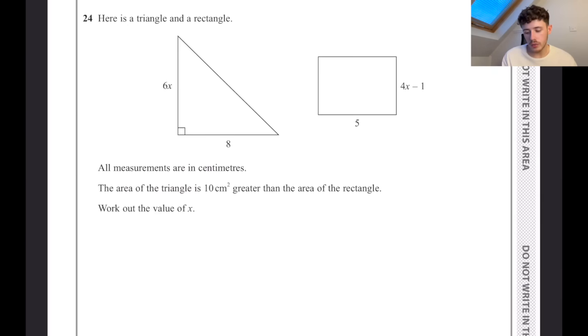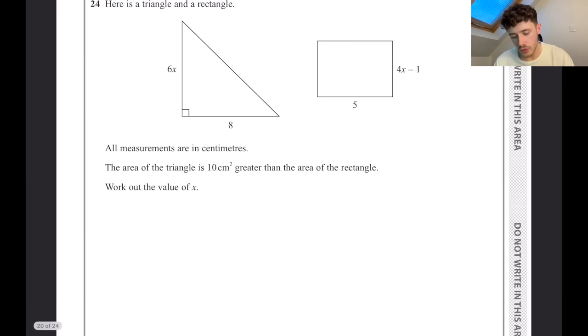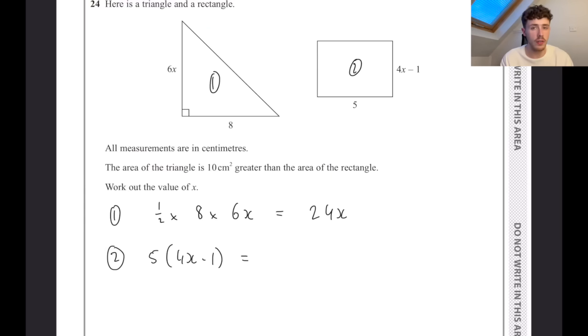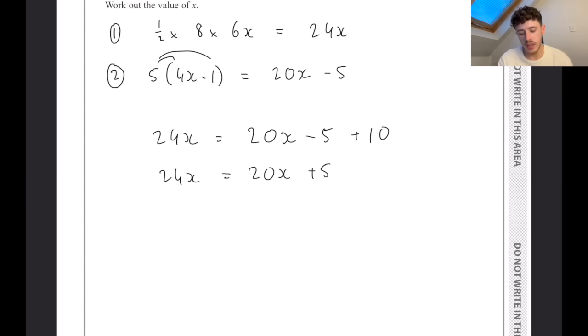Here is a triangle and a rectangle. All the measurements are in centimetres. The area of the triangle is 10 centimetres greater than the area of the rectangle. The area of the triangle, we know that is half base times the height. Area of 1, half times the base, which is 8, times 6x. Half of 8 is 4, times that by 6x, we get 24x. The area of 2 is 5 multiplied by 4x minus 1, which gives us 20x minus 5 by expanding that using the claw method. Now the area of triangle is 10 centimetres greater, so 24x equals the area of the rectangle with 10 on top of it. If we combine all this up, we're going to get a plus 5 on the end. We can take away the 20x to leave us with 4x equals 5. So x equals 5 over 4, which equals 1.25 as a decimal.